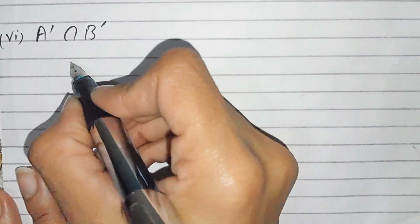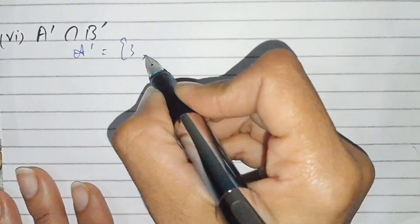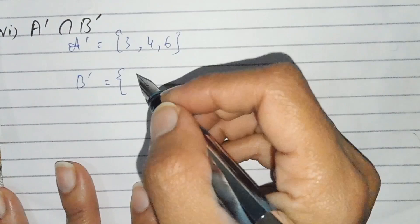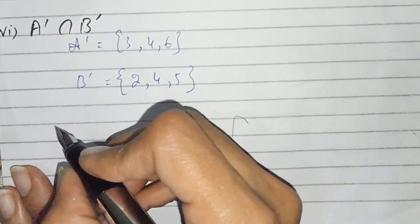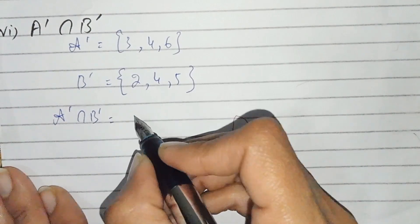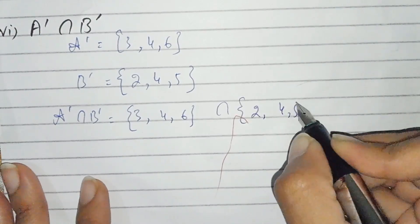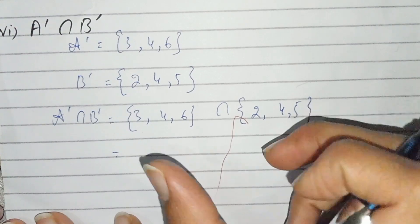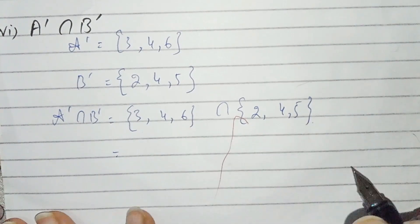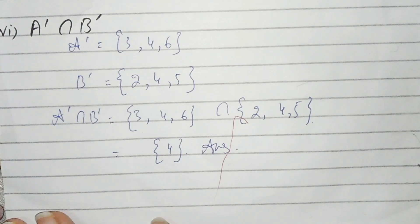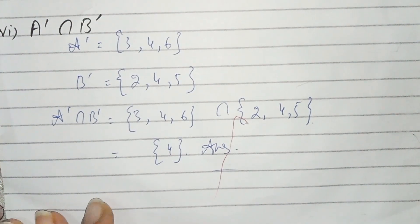Part number six: A complement intersection B complement. A complement is {3,4,6} and B complement is {2,4,5}. Taking the intersection — the common value — there is only {4}. This is the answer to part six, and question number three is solved. I hope you understood these questions very well. Thank you very much for watching. Take care of yourself. Allah Hafiz.